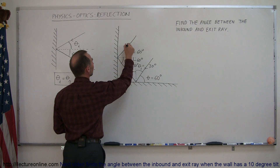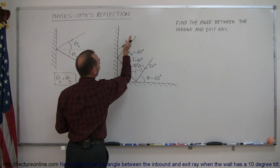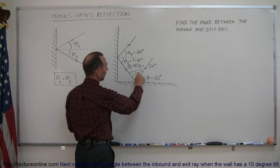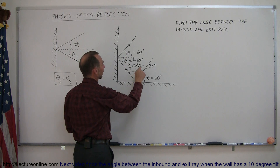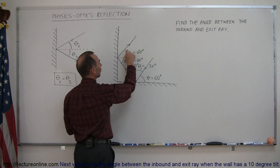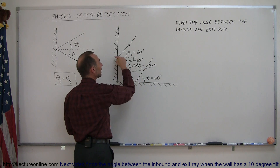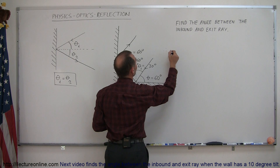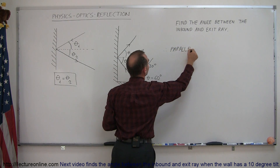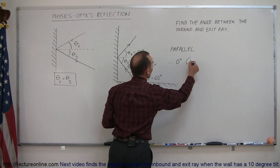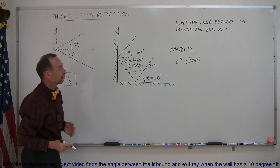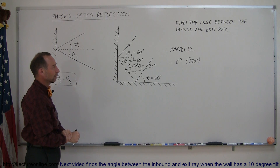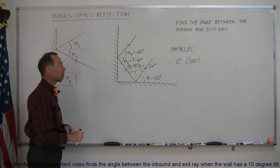This is the direction of the light, so this is the exit ray and this is the inbound ray. What is the angle between those two? If we add up all the angles — 30 plus 30 is 60, plus 60 is 120, plus 60 is 180 — the ray has made a 180-degree change in direction, which means the inbound and outbound rays are parallel to each other. The angle between them is 0 degrees, or strictly speaking they differ by 180 degrees since one is inbound and the other is outbound. So there's a simple example — let's do one that's a little bit more challenging in our next video.